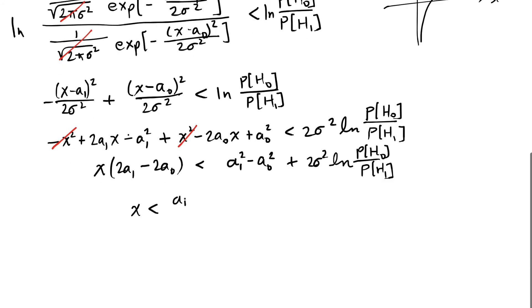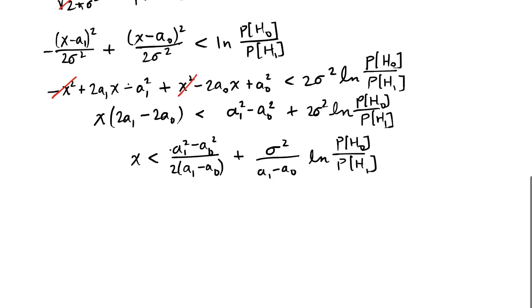And finally, I've divided both sides by a1 minus a0, and I've canceled out a 2 in front of the sigma-squared. And I can factor out this a1 minus a0 squared, and I can factor that out as a1 minus a0 quantity multiplied by the quantity a1 plus a0, and the a1 minus a0 will cancel what's in the denominator. So then I'll be left with this expression.